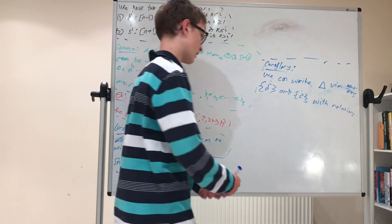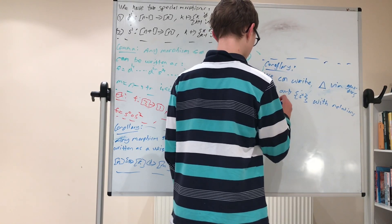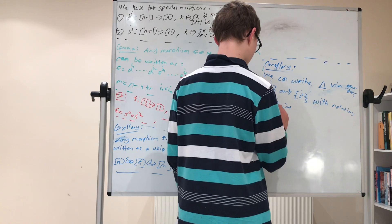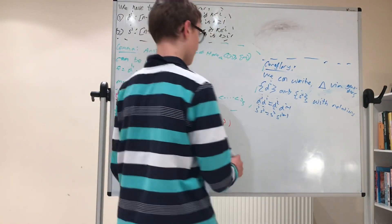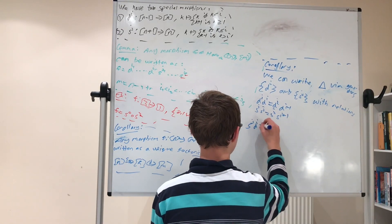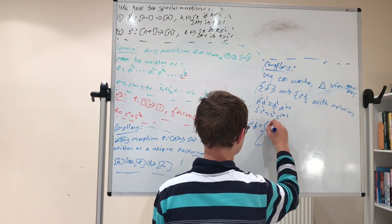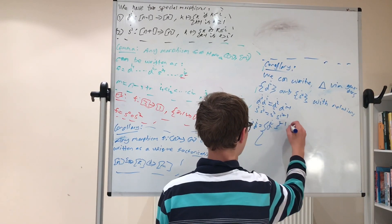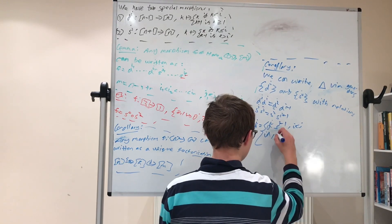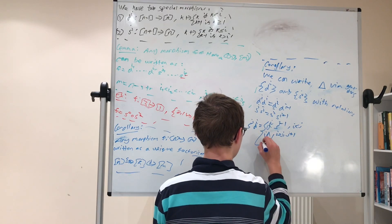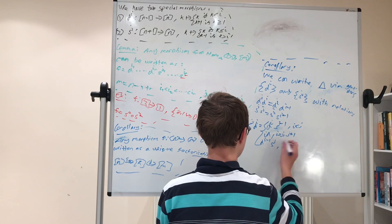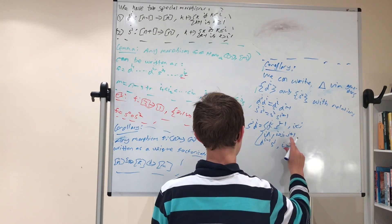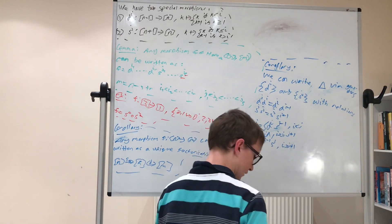So, yeah, that dj di equals di dj minus 1, and si sj equals sj si plus 1. And, finally, is that when we combine the two with sj di, we get di sj minus 1 if i is less than j, we get the identity if i equals j or j plus 1, and we get di minus 1 sj if i is bigger than j plus 1. And this might look quite a daunting piecewise function, but actually, if you look into it a bit closer, it's actually not too difficult to check.